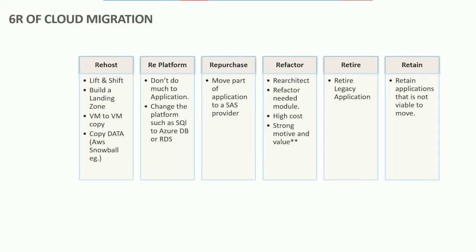The Six R's of cloud migration are: rehost, re-platform, repurchase, refactor, retire, and retain. These are the cloud strategies that you must be talking about and selling.